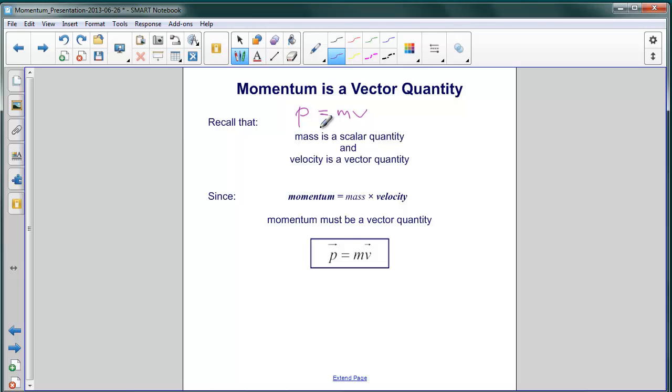Now, mass is a scalar quantity and it's always positive whereas velocity is a vector quantity. It not only has a size but it also has a direction.